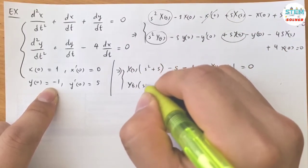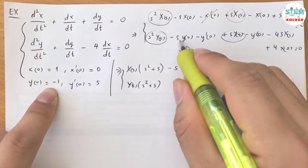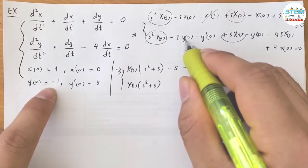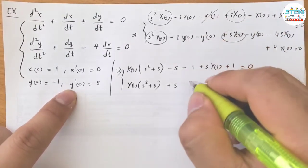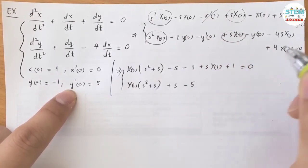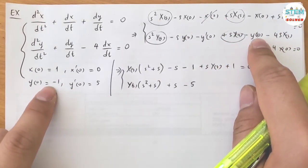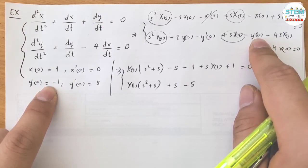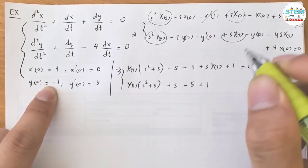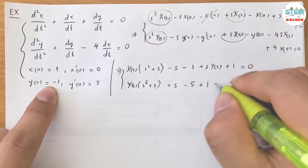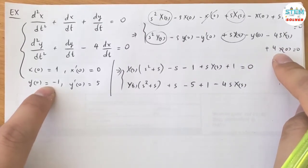Factor out capital Y of s — it's 1 plus s. y of 0 equals negative 1 plus s, and y prime of 0 equals negative 5. y of 0 equals negative 1.